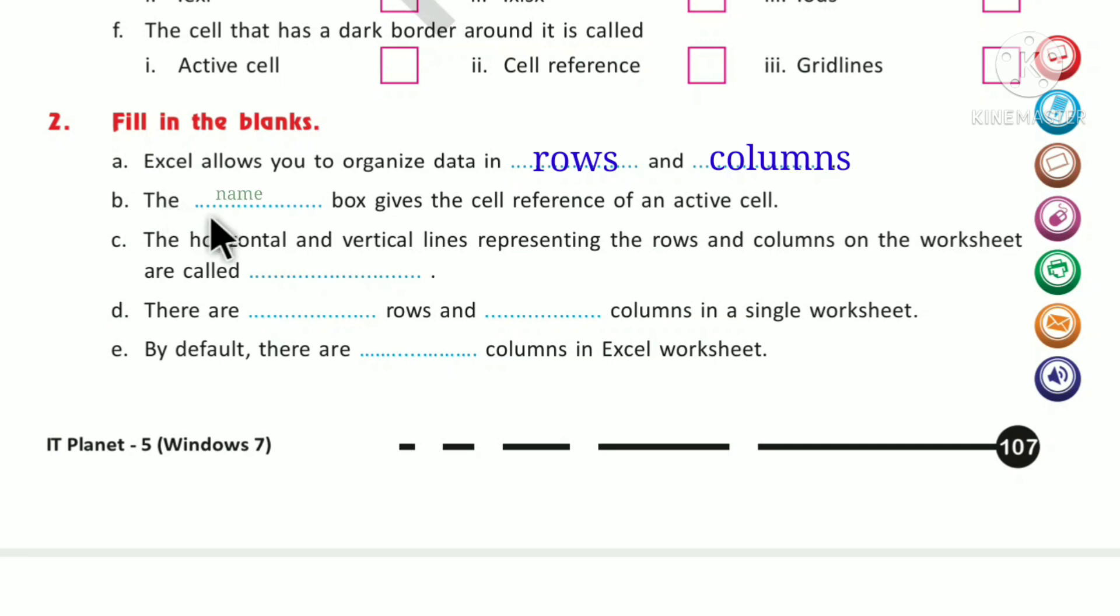Question C: The horizontal and vertical lines representing the rows and columns on the worksheet are called _____ - gridlines. Question D: There are _____ rows and _____ columns in a single worksheet.